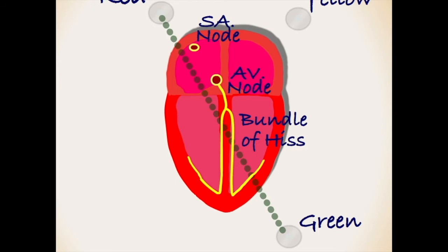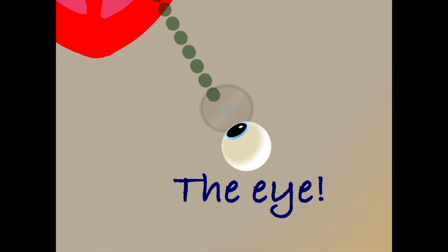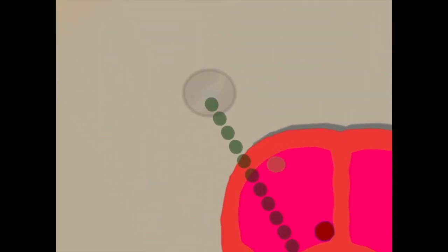When learning to interpret ECGs it can help to visualize an eye sitting behind one of the electrodes, looking back along the lead towards the other electrode. In this case our eye is sitting under the green electrode, looking up along lead 2 towards the red electrode.